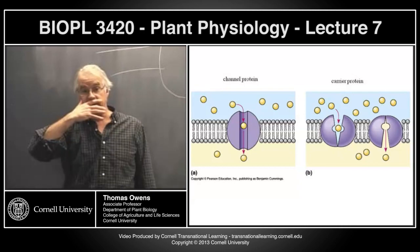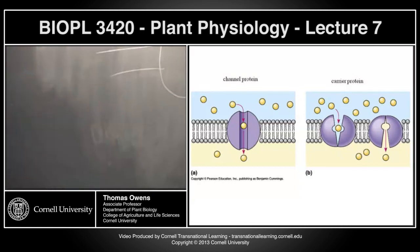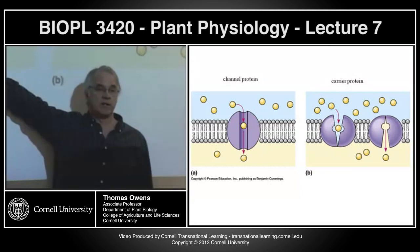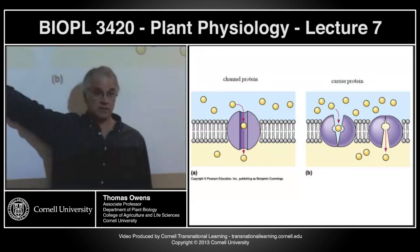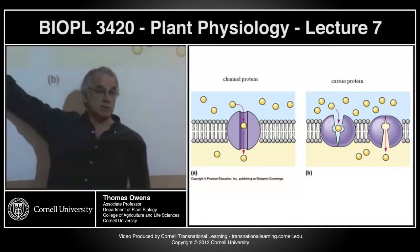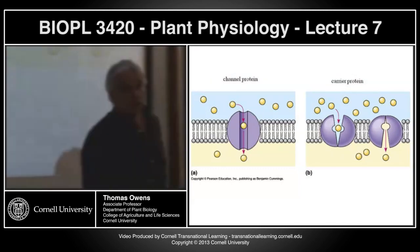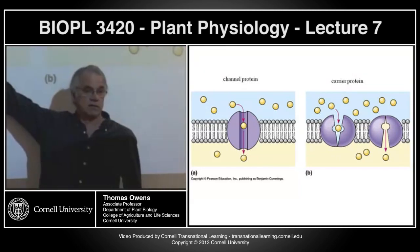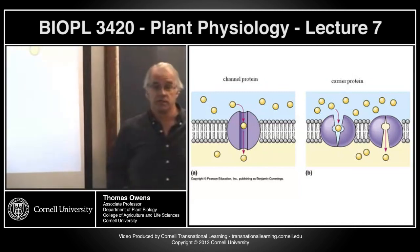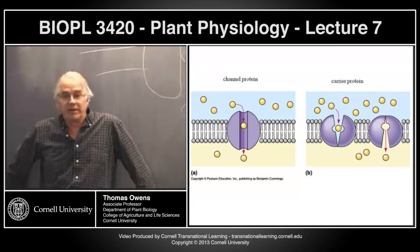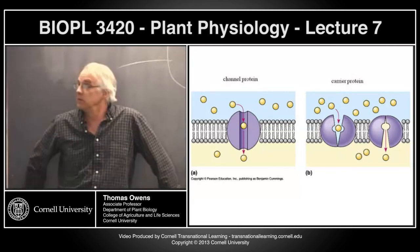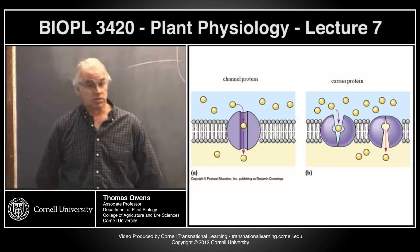One last thing that distinguishes channels from carrier proteins: with one exception, channel proteins carry inorganic ions — sodium, potassium, chloride, calcium. The exception is aquaporins, which carry water. There's no such thing as a glucose channel or a fructose channel. Those organic molecules, charged or not, move through carrier proteins. So 99.9% of the time, other than water, channels carry inorganic ions only; carrier proteins carry organic molecules.